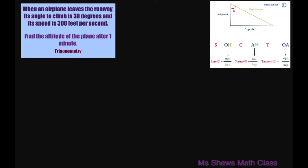It's just a right triangle like this. Altitude just means the height for an airplane. So this is your little airplane here, and it's climbing this way, and the degrees here is 30 degrees. All right, so we have to find the altitude of the plane after one minute.